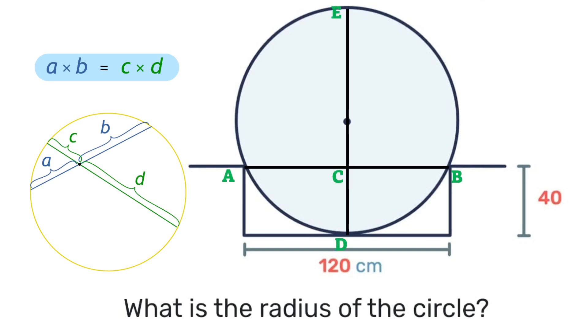Now that vertical line segment cuts that horizontal line segment exactly in half. It bisects it. So that 120 centimeters will be divided into two so that the line segments CA and CB are equal to each other, which is 60 each.